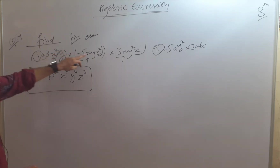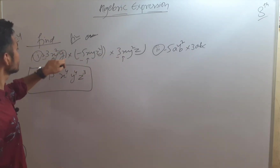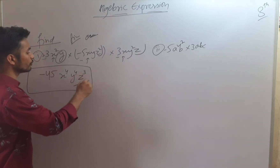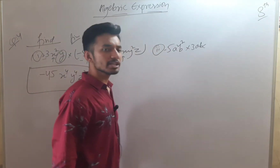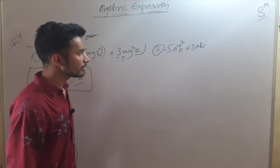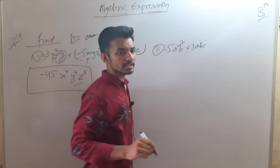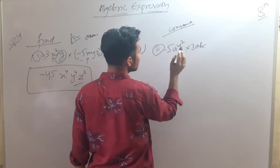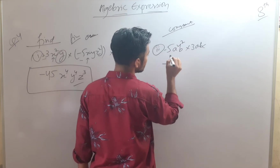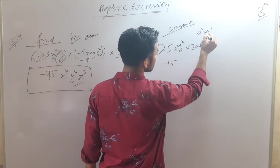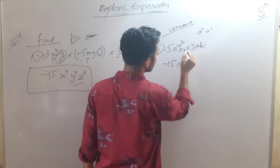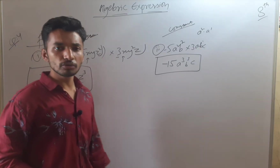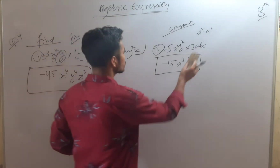So the final result is minus 45 x⁴y⁴z³. For the second section: minus 5a²b² into 3abc. First multiply the constants: minus 5 into 3 is minus 15. Then for variable a: a² into a¹ — powers: 2+1 = 3, so a³. For b: b² into b¹ = b³. Then we have c. So the final result is minus 15a³b³c.